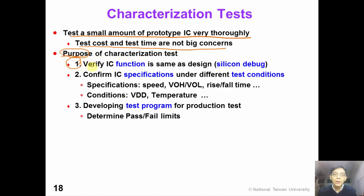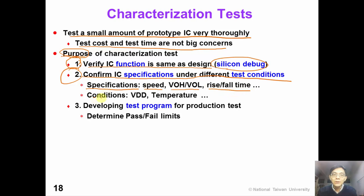The purpose of characterization test includes: first, we want to verify the functionality of the IC is the same as our design — this is also known as silicon debug; if there is anything wrong with the function, we need to redo our design. Second, we want to confirm IC specifications under different test conditions, such as operation speed, DC parametrics like VOH and VOL, or AC parametrics like rise time and fall time. The test conditions can be power supply voltage VDD or temperature.